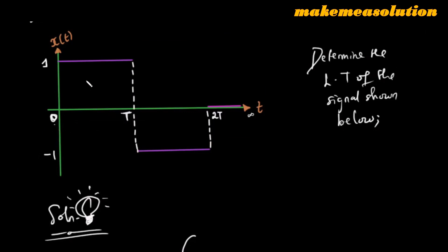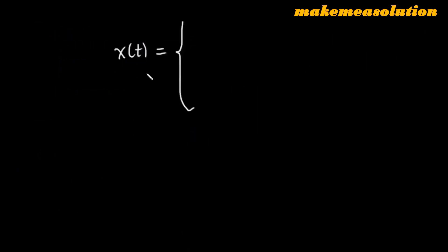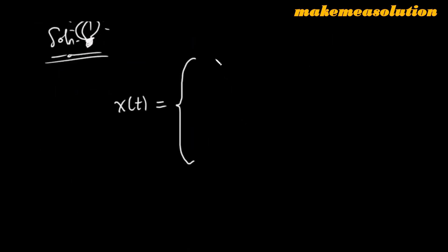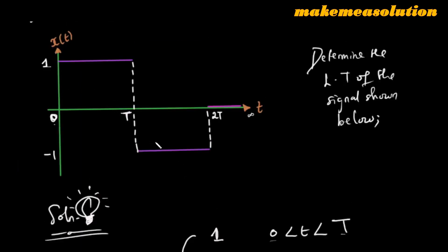First, let's see what is happening. From t equal to zero to capital T, the value of x(t) is constant at one — that is a positive or high value. So we can represent it as x(t) equals one whenever t is between zero and capital T. We can also see that the value of x(t) has flipped and reversed polarity to minus one.